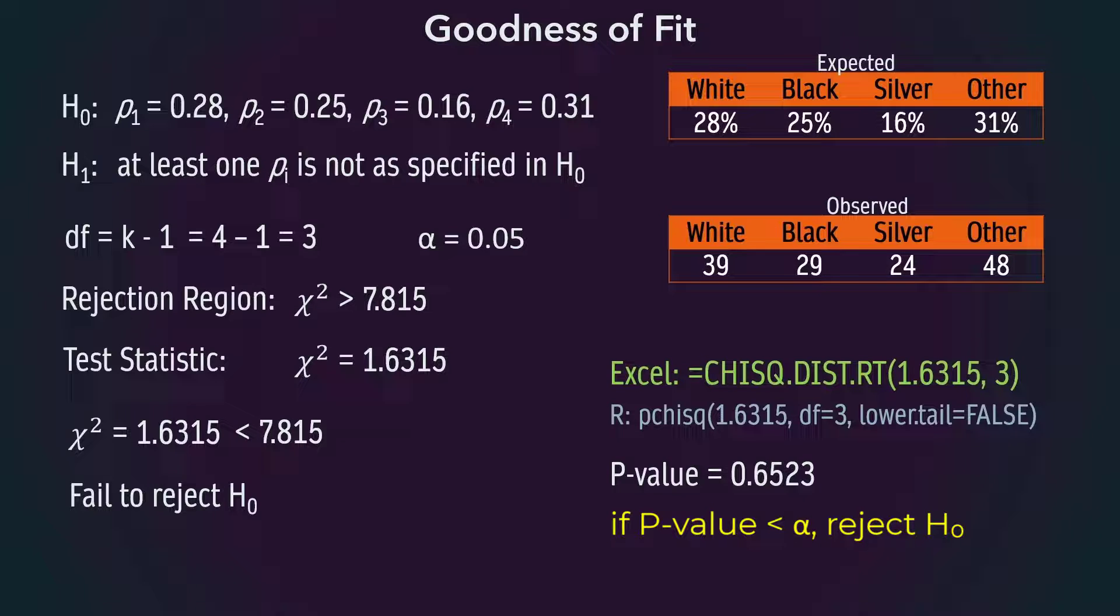Since this p-value is much larger than alpha of 0.05, it confirms our decision to not reject the null hypothesis.